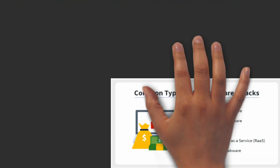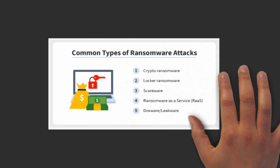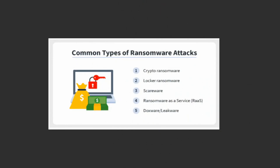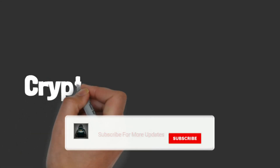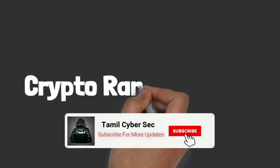There are 5 common types of ransomware: Crypto ransomware, Locker ransomware, Scareware, Ransomware as a Service, and Leakware. These are the 5 major types of ransomware.